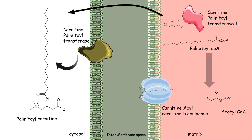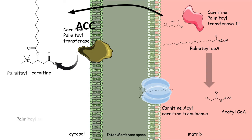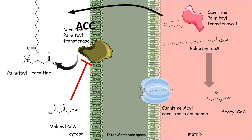In the fed state, the body tries not to degrade fatty acids, since there is already plenty of energy coming from glucose. In this situation, the body must prevent fatty acid oxidation from taking place. At the same time, the body needs to synthesize fatty acids and store them in adipose tissue. In the liver hepatocytes, fatty acid biosynthesis is favored, and the key molecule important for this is malonyl-CoA, which turns out to be an inhibitor of CPT1.